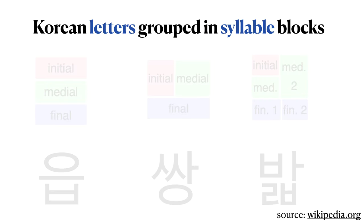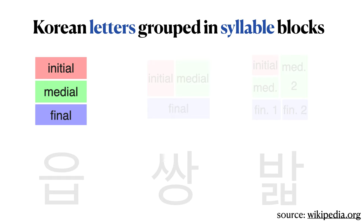When writing Korean, Korean letters, which represent sounds, are grouped together in blocks that correspond with syllables. There are multiple ways that these blocks can be formed. One is shown here where we have an initial sound in the syllable, a medial sound in the syllable, and a final sound in the syllable. Here is an example of a syllable composed of three letters.